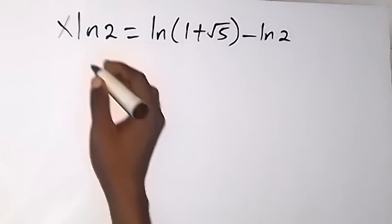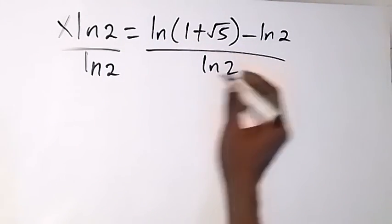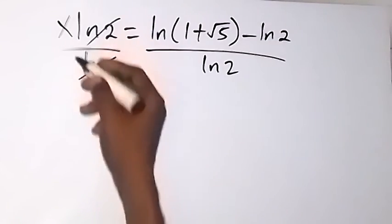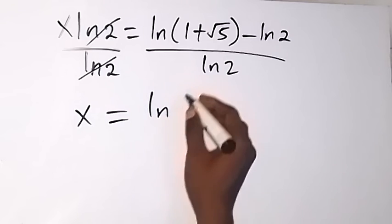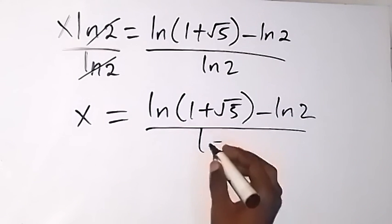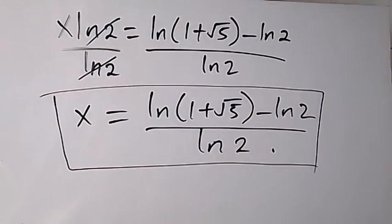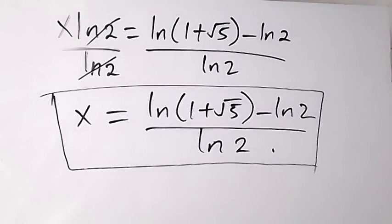We divide both sides by ln 2. The ln 2 on the left cancels, leaving x equals ln of 1 plus root 5, minus ln 2, all divided by ln 2. When we solve this with a calculator and substitute the answer back into the original equation, it satisfies that equation. So this is the solution to the problem. Thank you for joining us — don't forget to subscribe to this channel and turn the notification bell on to receive notifications. See you in the next class, bye for now.